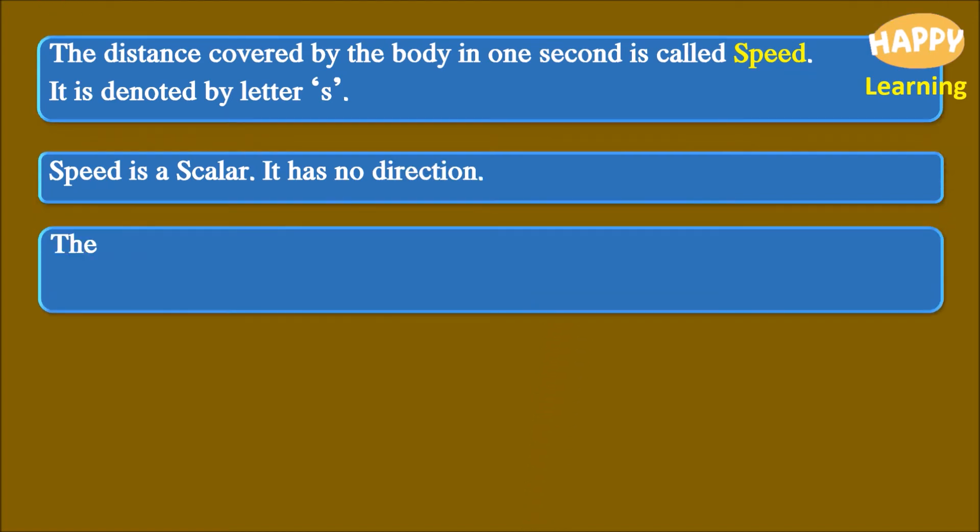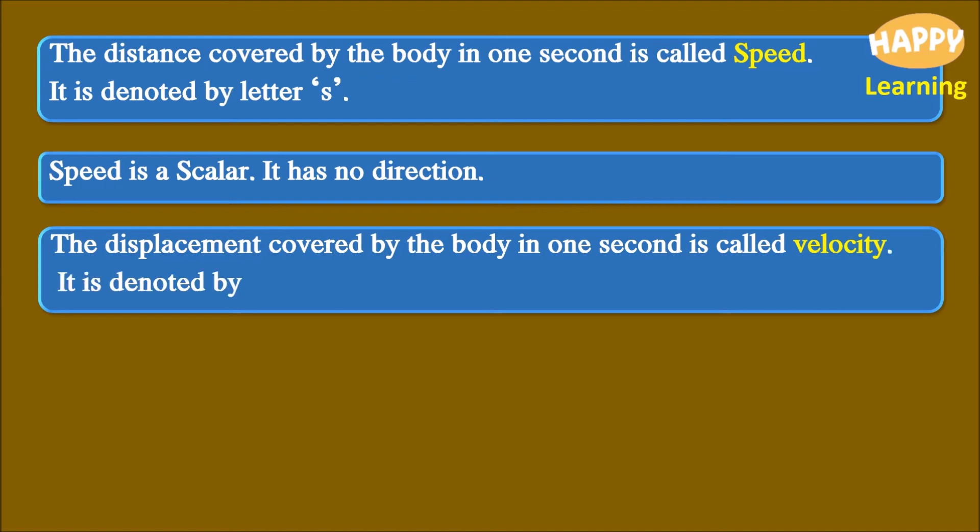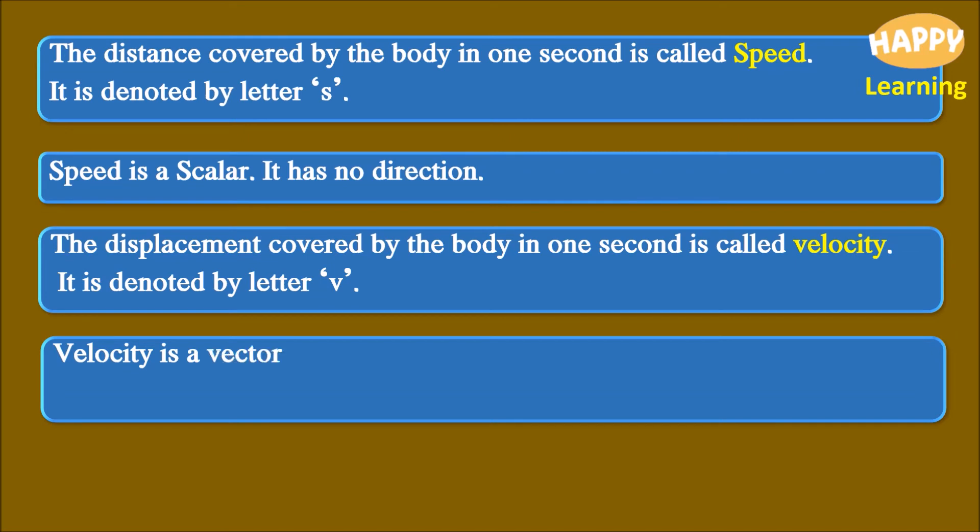The displacement covered by the body in one second is called velocity. It is denoted by letter V. Velocity is a vector. Its direction is from initial point towards the final point.